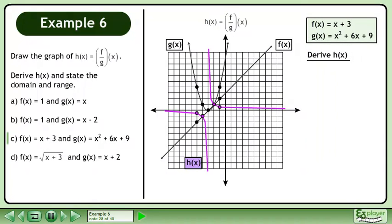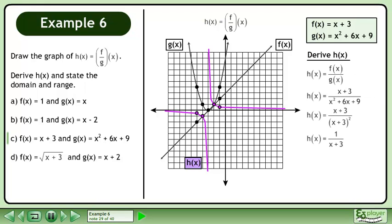We'll derive the function h. Replace f with x plus 3, and replace g with x squared plus 6x plus 9. The denominator is a perfect square trinomial, so it can be factored to x plus 3 squared. Cancel to get h equals 1 over x plus 3.